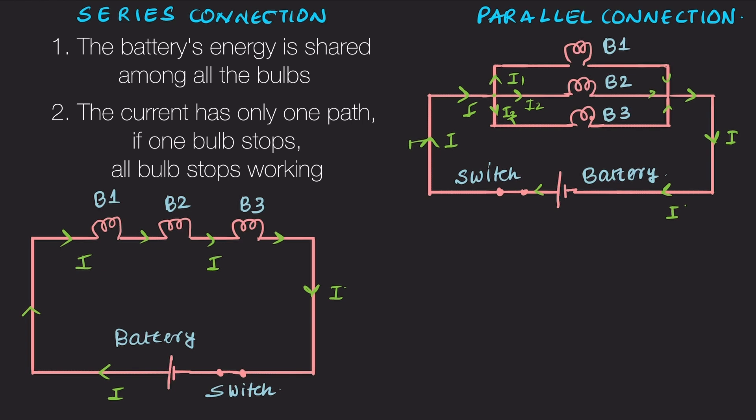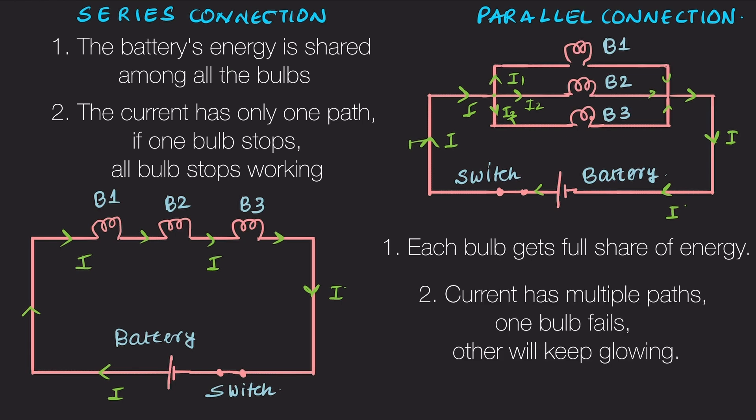Now let's look at the schematic diagram for a parallel connection. You can see the symbols for the battery, bulb and switch. What are the key takeaways here? In parallel connection, each bulb gets full share of energy from the battery. No sharing required. The current has multiple paths. So if one bulb stops working, no problem, the others will glow happily.